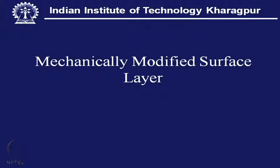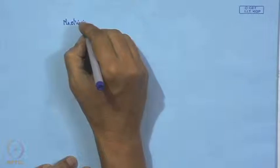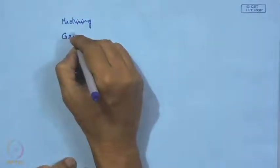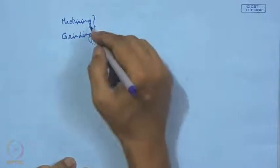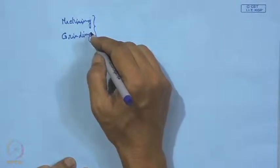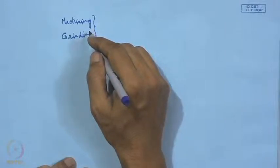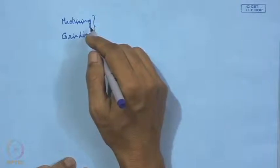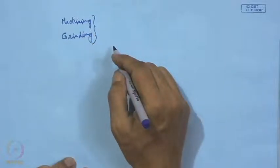A surface formed by machining or grinding has grinding marks, machining marks, and feed marks. There can also be high residual stress because of unequal cooling between the top surface and the core area, meaning a high temperature gradient.